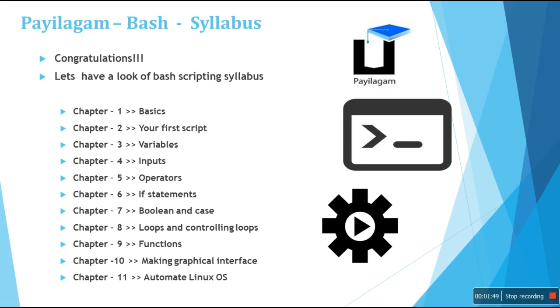In chapter 10 you will make a graphical interface through bash scripting. In chapter 11, the final chapter, you are going to automate your Linux operating system — whether it is an installation or a Linux server configuration. You will learn to automate the entire Linux operating system by the end of this course.